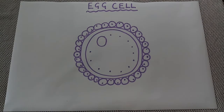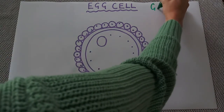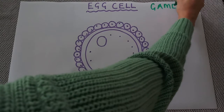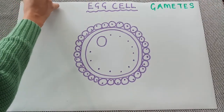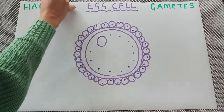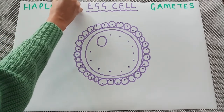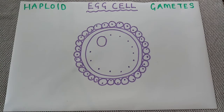In this video we're going to have a look at the egg cell. This is one of the human gametes, one of the human sex cells, and it is also a haploid cell. Haploid cells have half the number of chromosomes — in this case 23 single chromosomes in a human. A diploid cell has double the amount of chromosomes: either 23 pairs or 46 single chromosomes in humans.